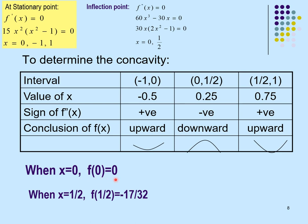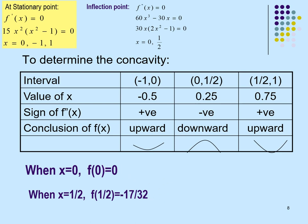Substitute the critical x-values into f(x) to get y-values. For x = −2, y = 60, giving the point (−2, 60) as a relative maximum. For x = 4, substituting gives the corresponding y-value, giving the relative minimum point. By the second derivative test, (−2, 60) is a relative maximum because f''(−2) < 0, and the other point is a relative minimum because f''(4) > 0.